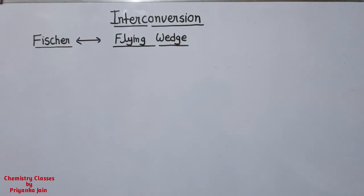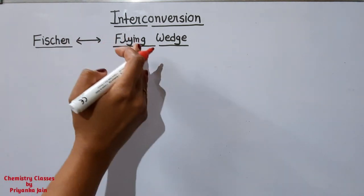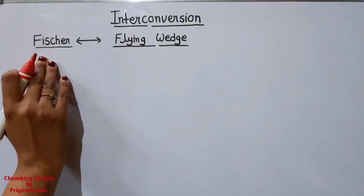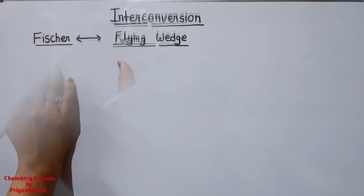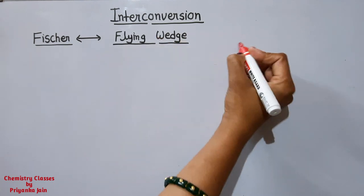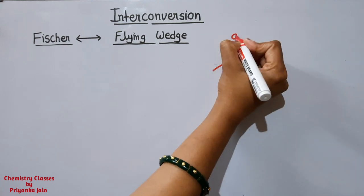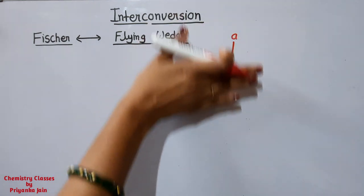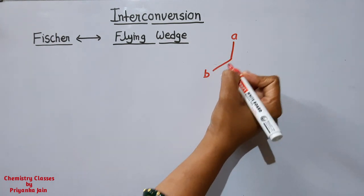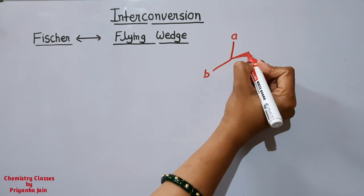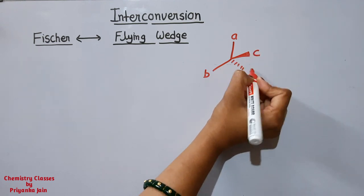The next important thing to study is the interconversion of various representations, which is very important for solving questions involving different types of isomers. First, we will look at conversion of Fischer projection to flying wedge, or flying wedge to Fischer projection. Suppose we have a flying wedge formula: two groups are in the plane of the paper, one group is above the plane (wedge), and one is below the plane (dash).